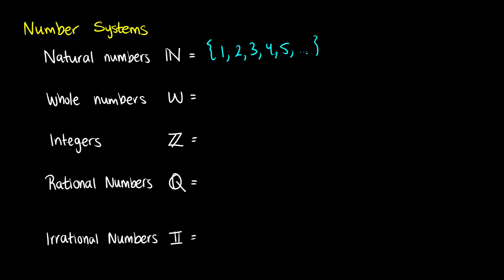The whole numbers is the next largest set, and the whole numbers is just the natural numbers with 0. So the whole numbers start at 0 and they continue on 1, 2, 3, and so on. These are all whole numbers — no fractions, no decimal points, just whole numbers.